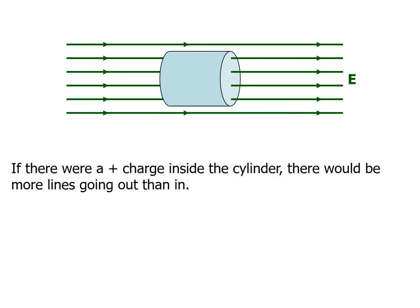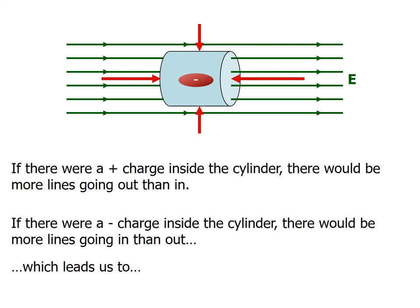If there were a positive charge inside the cylinder, there would be more field lines going out than coming in. Conversely, if there is a negative charge inside, more lines go in than go out — the lines point inward toward the negative charge. This illustrates the relationship between enclosed charge and net electric flux through a closed surface.